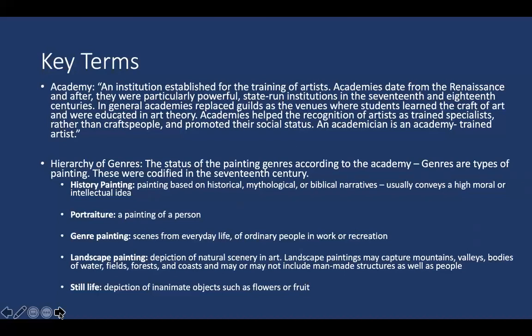Our key terms include the academy, which is an institution established for the training of artists. Academies date from the Renaissance and were particularly powerful as state-run institutions in the 17th and 18th centuries. In general, academies replaced guilds as the venues where students learned the craft of art and were educated in art theory. Academies helped the recognition of artists as trained specialists rather than craftspeople and promoted their social status. An academician was an academy-trained artist.